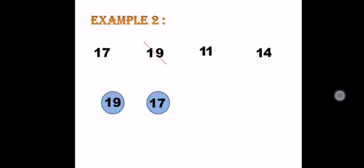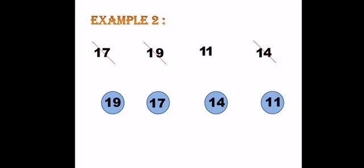Cross out seventeen. Now, we only have eleven and fourteen left. Let's compare one to four. Four is bigger than one. So, fourteen will be the following number. Cross out fourteen. And finally, eleven will be the last number, as it is the smallest number we have.